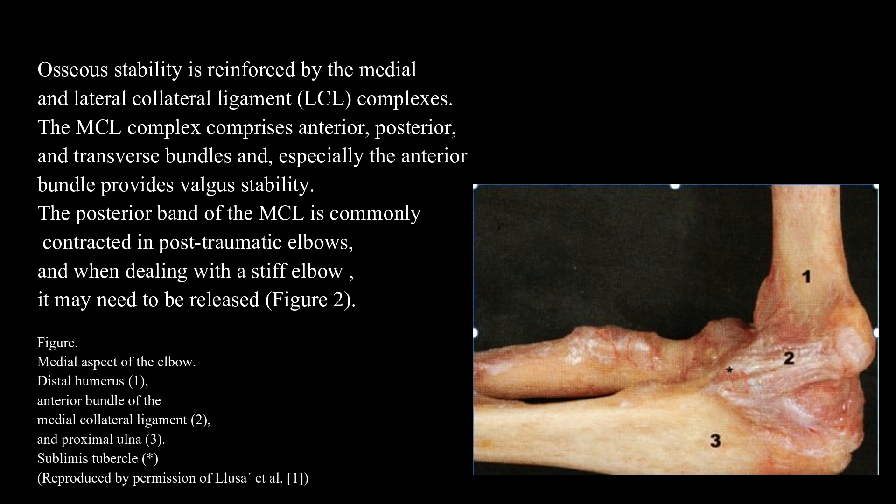The MCL complex comprises anterior, posterior, and transverse bundles, and especially the anterior bundle provides valgus stability. The posterior band of the MCL is commonly contracted in post-traumatic elbows, and when dealing with a stiff elbow, it may need to be released.